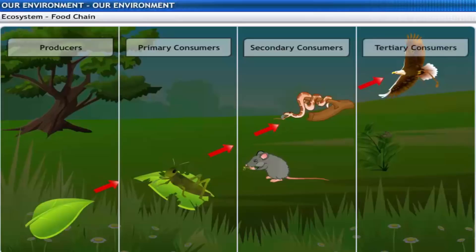And larger carnivores like an eagle or tertiary consumers form the fourth trophic level. Did you know that a huge amount of energy is lost at each stage in the food chain?